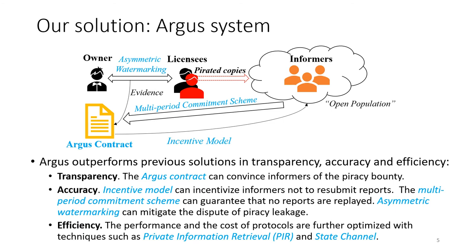To solve the challenge, we propose the Augurs system, which outperforms previous solutions in transparency, accuracy, and efficiency. For transparency, we use a smart contract which can convince informers of the piracy bounty. For accuracy, we use a special incentive model which can incentivize informers not to resubmit reports, and a multi-period commitment scheme which can guarantee that no reports are replayed. We also use asymmetric watermarking that can mitigate the dispute of piracy leakage. For efficiency, we optimize the performance and cost of several protocols, using techniques such as private information retrieval and state channel.